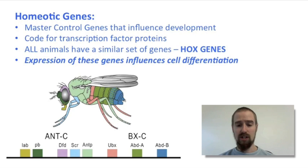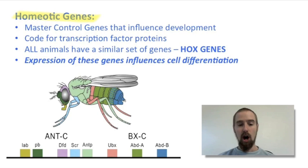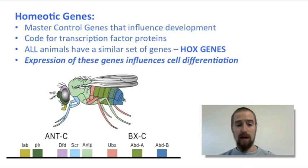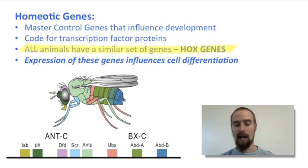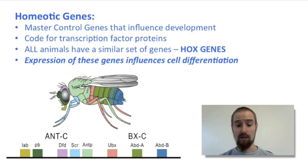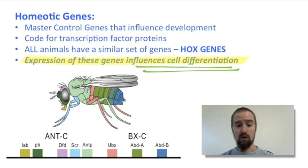Some of the most important genes involved in cell differentiation and specialization are called homeotic genes. Homeotic genes are like the master control genes that guide the development of an organism. These homeotic genes code for transcription factor proteins that regulate the expression of other genes in that cell, and all animals have a fundamentally similar suite of homeotic genes called homeobox or hox genes. Different hox genes are expressed in different cells, meaning that different transcription factors are produced in different cells. These transcription factors control which other genes will be expressed in those cells and ultimately determine what those cells are capable of doing.